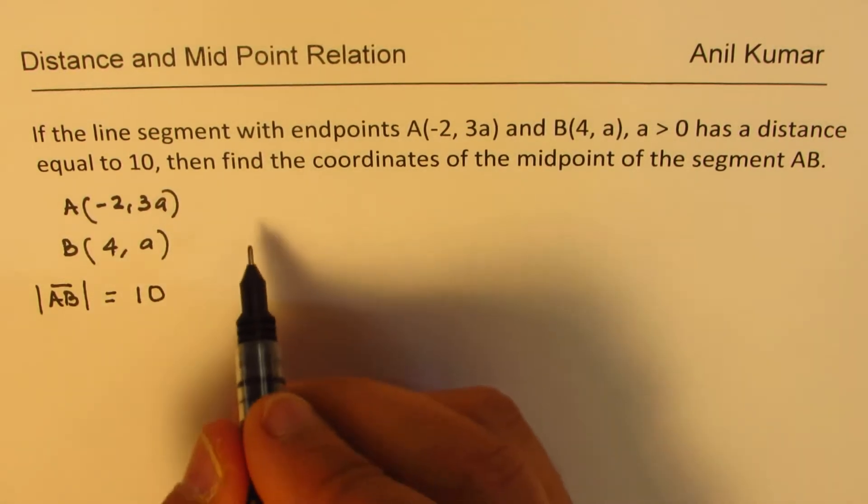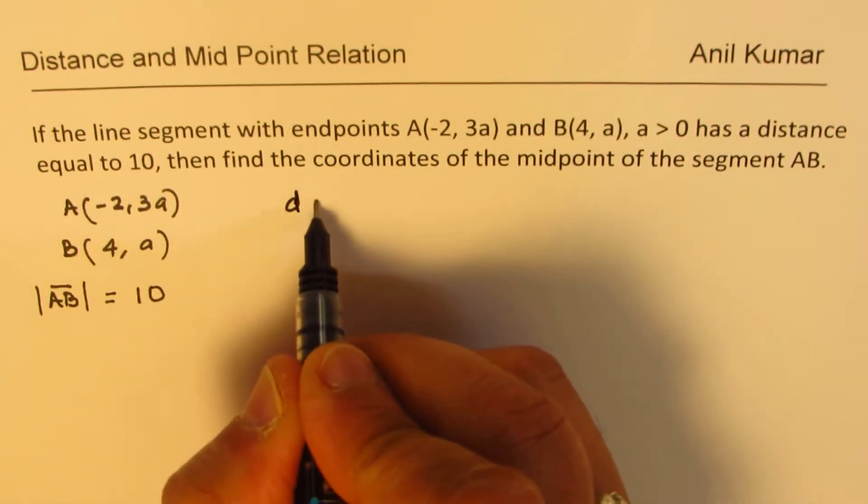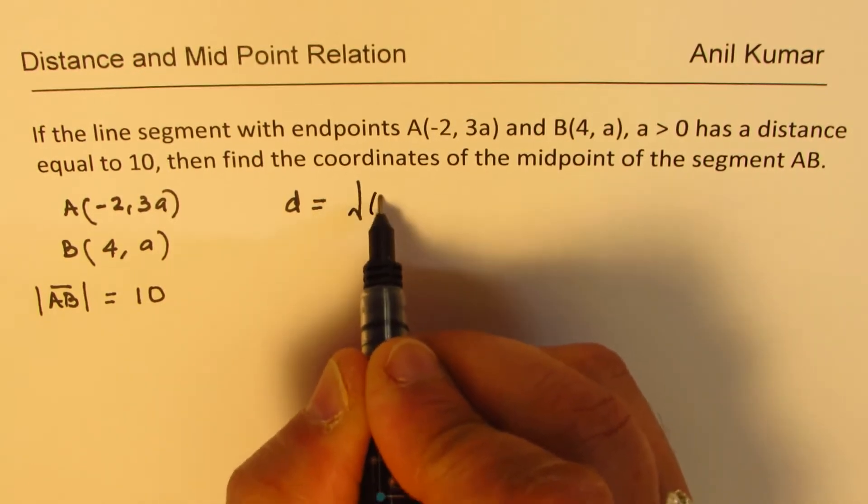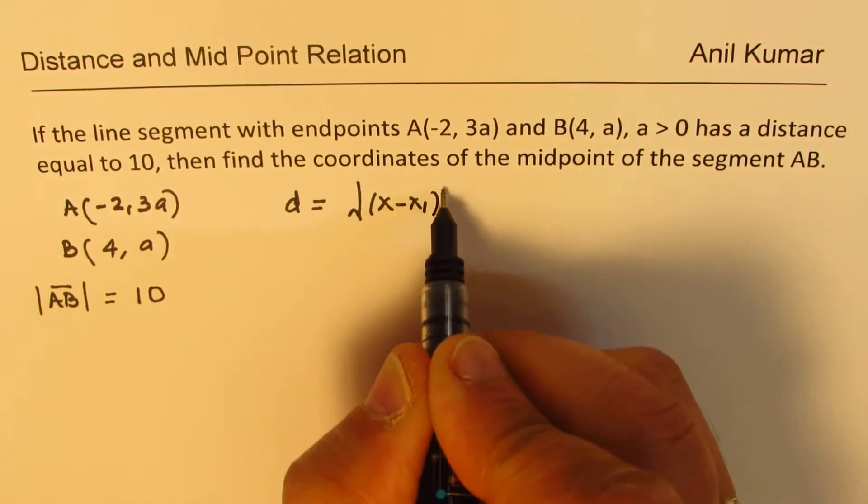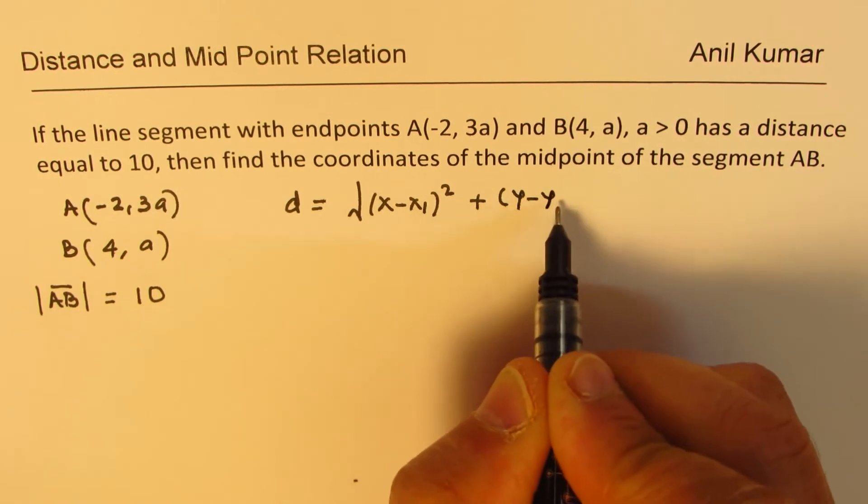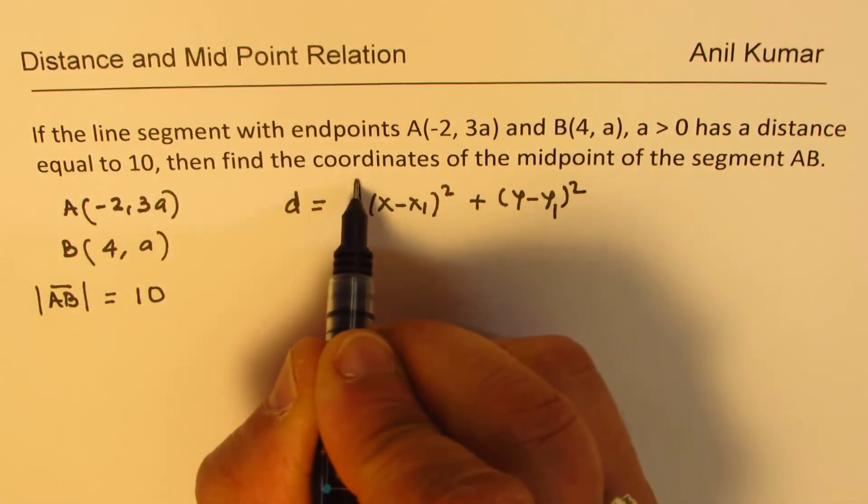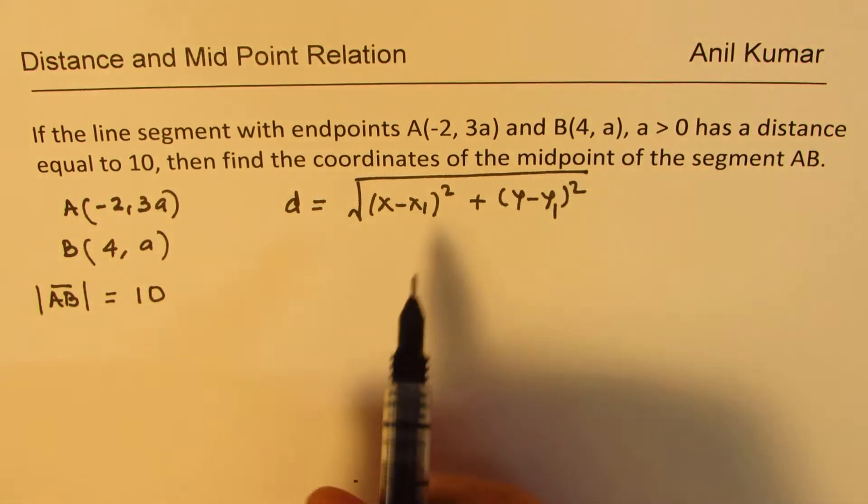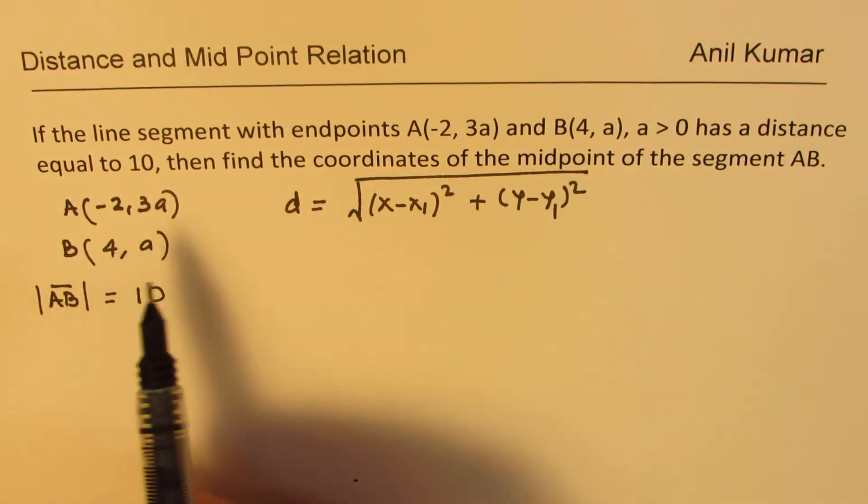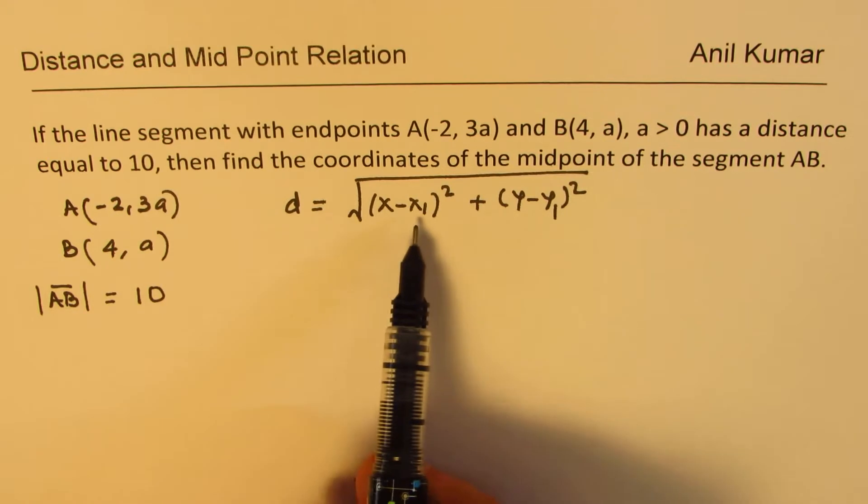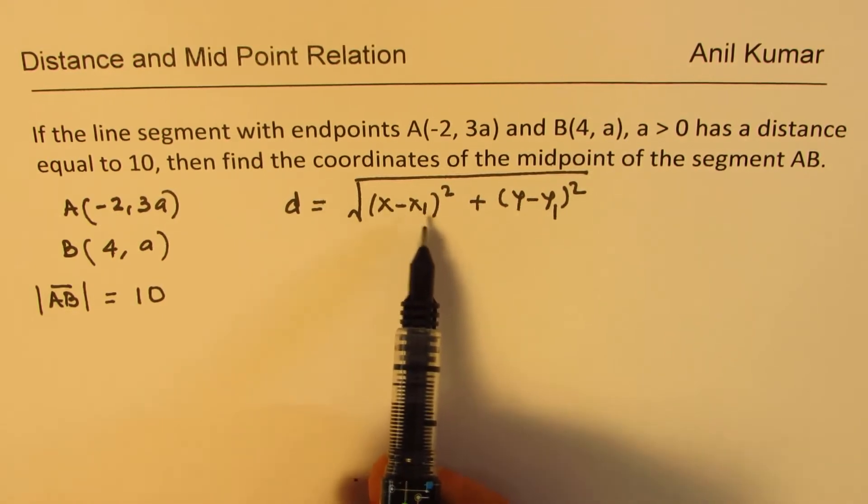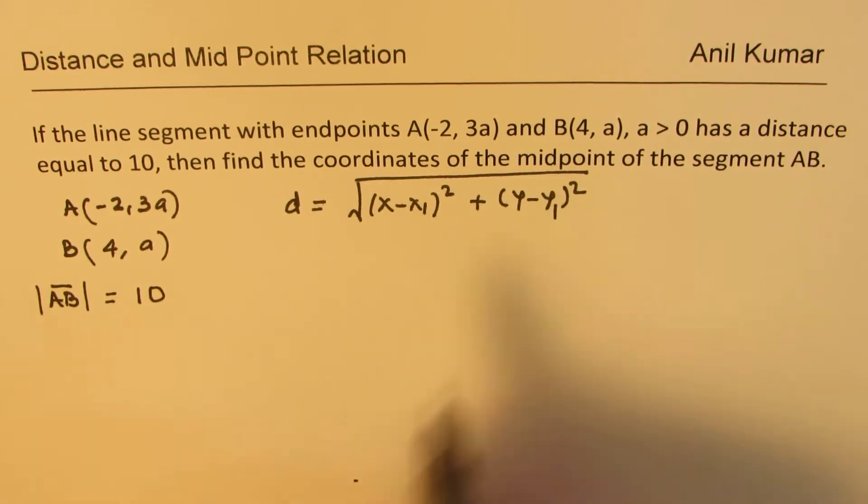The formula for distance is: square root of (x₂ - x₁)² + (y₂ - y₁)². This represents the difference in two x values and difference in two y values.